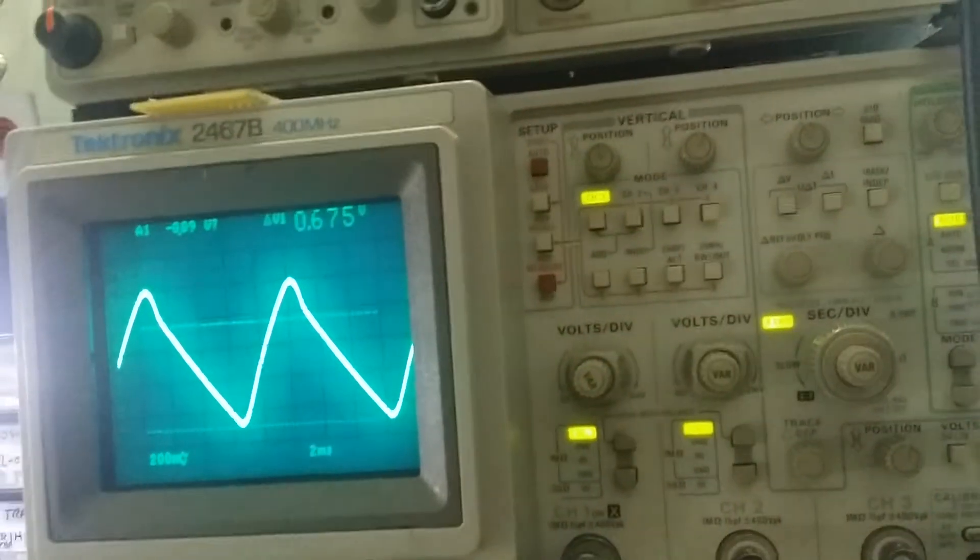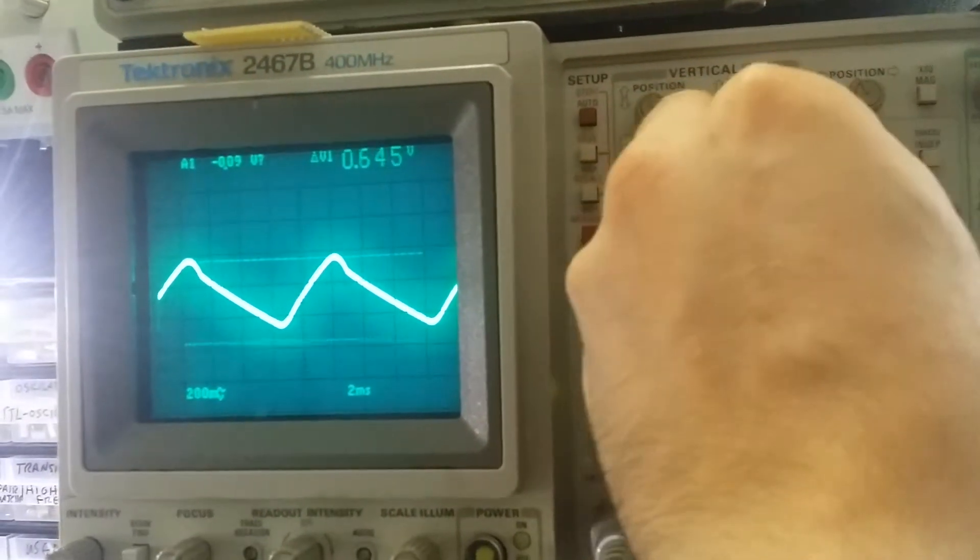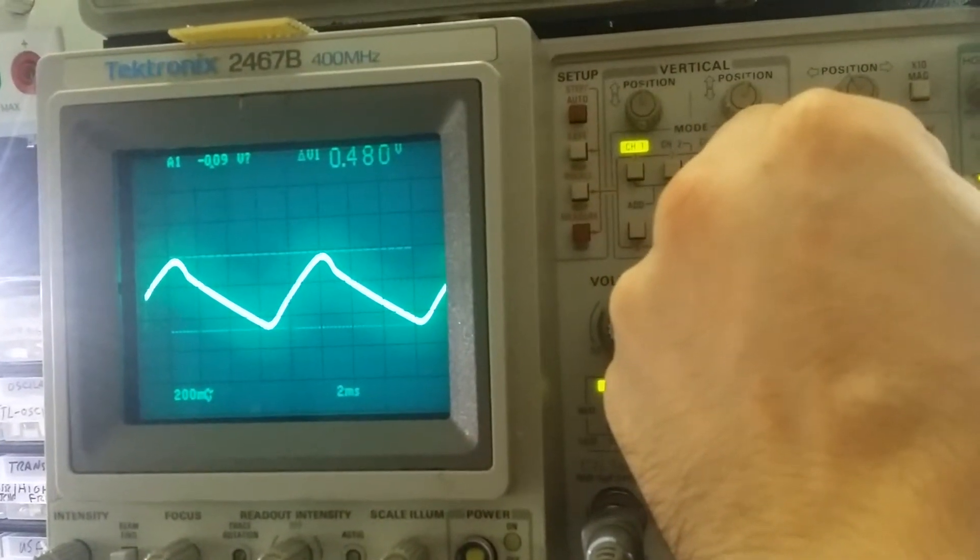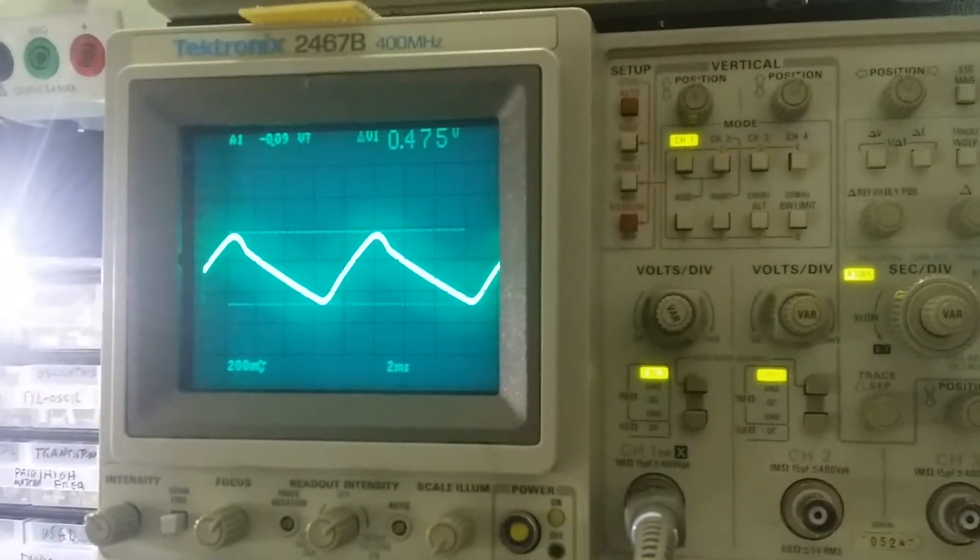If I introduce another capacitor, as you can see here, we got 475 millivolts of ripple. That is at 4 amp.